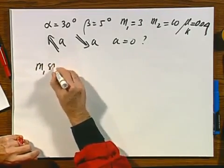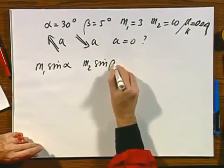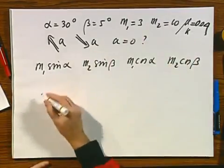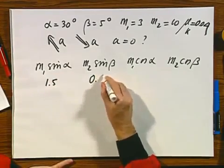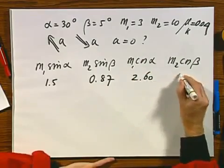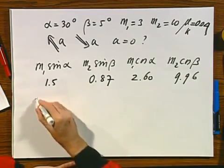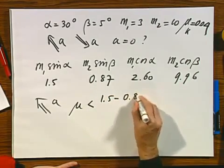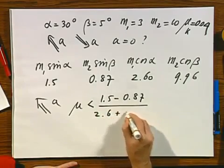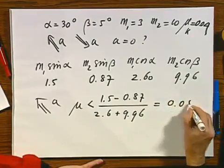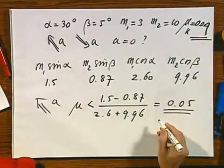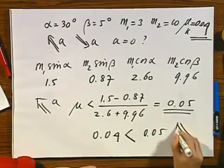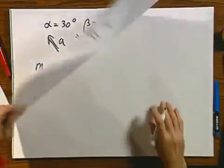Well, what I did was, I said, let's calculate m1 sine alpha, m2 sine beta, m1 cosine alpha, and m2 cosine beta. I substitute these numbers in. If I didn't make a mistake, I find plus 1.5, 0.87, 2.60, 9.96. Let's first evaluate the situation whether perhaps a is in this direction. In other words, is mu smaller than 1.5 minus 0.87 divided by 2.6 plus 9.96. And the answer is yes, because this answer is 0.05, and the actual friction coefficient is 0.04, and since 0.04 is indeed smaller than 0.05, the acceleration is non-negotiable, will be in this direction.